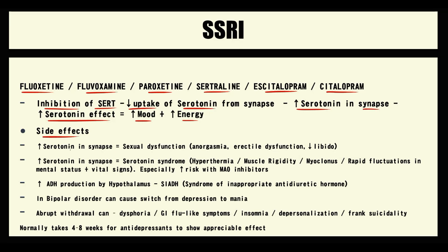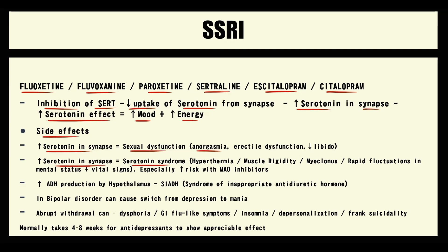To summarize SSRI side effects: with increasing serotonin in the synapse, the risk of sexual dysfunction increases — usually anorgasmia, which is inability to have a proper orgasm. By the way, this side effect is the reason why SSRIs are so good for premature ejaculation. Also, the risk of serotonin syndrome increases; serotonin syndrome manifests with hyperthermia, muscle rigidity, myoclonus, and rapid fluctuations in mental status and vital signs. We must remember that prescribing SSRIs with MAO inhibitors greatly increases the risk of serotonin syndrome.